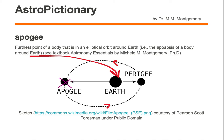Now normally we would cite a distance saying how far away the object is from Earth, but the apogee point is the furthest point of a body that is in an elliptical orbit around the Earth.